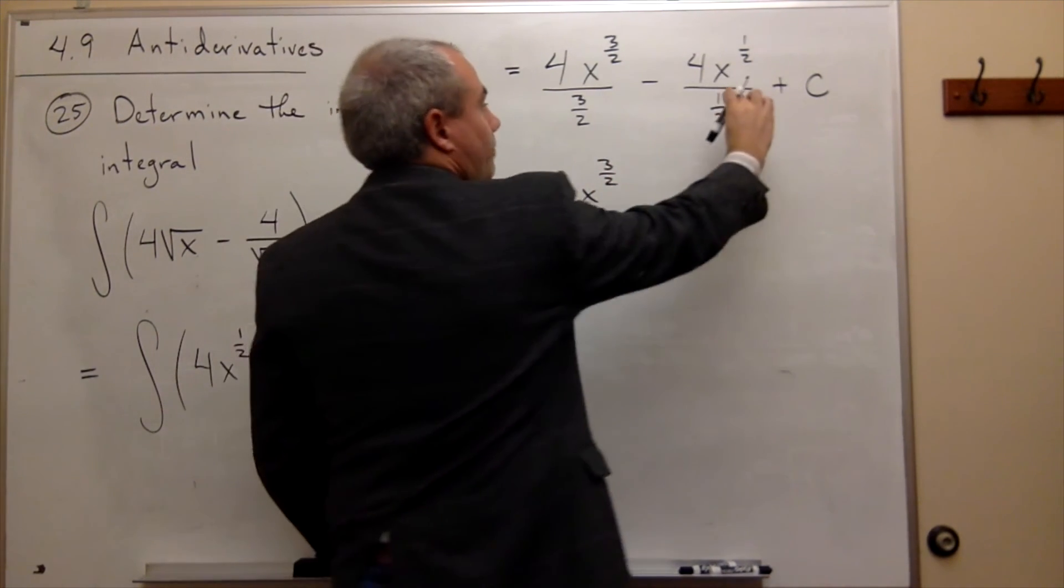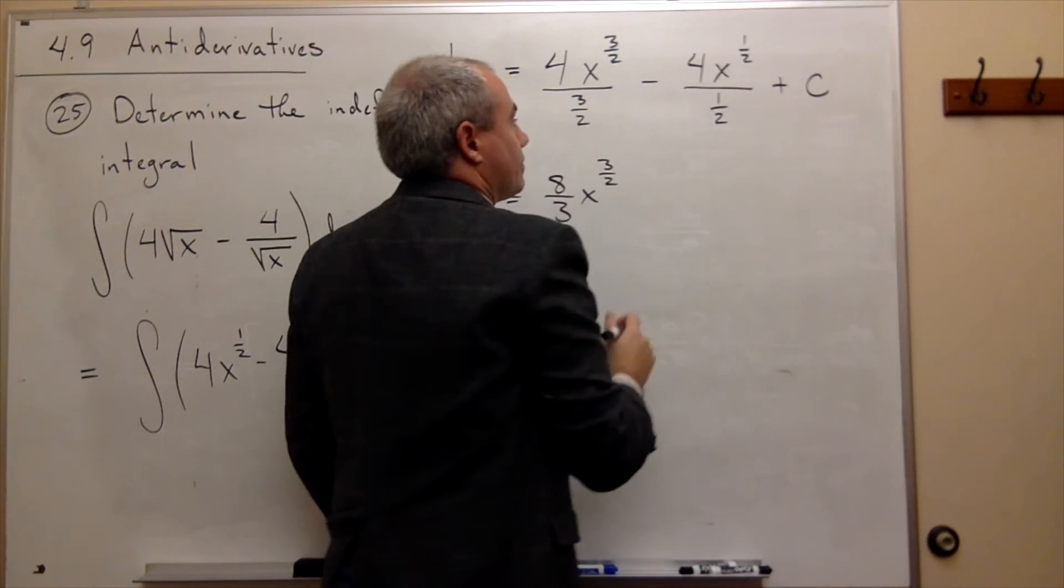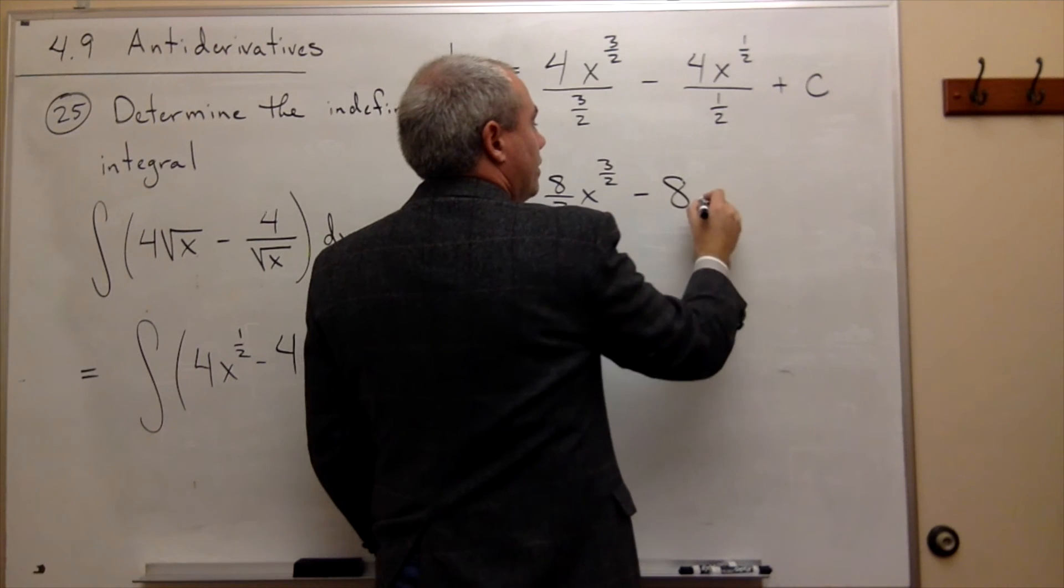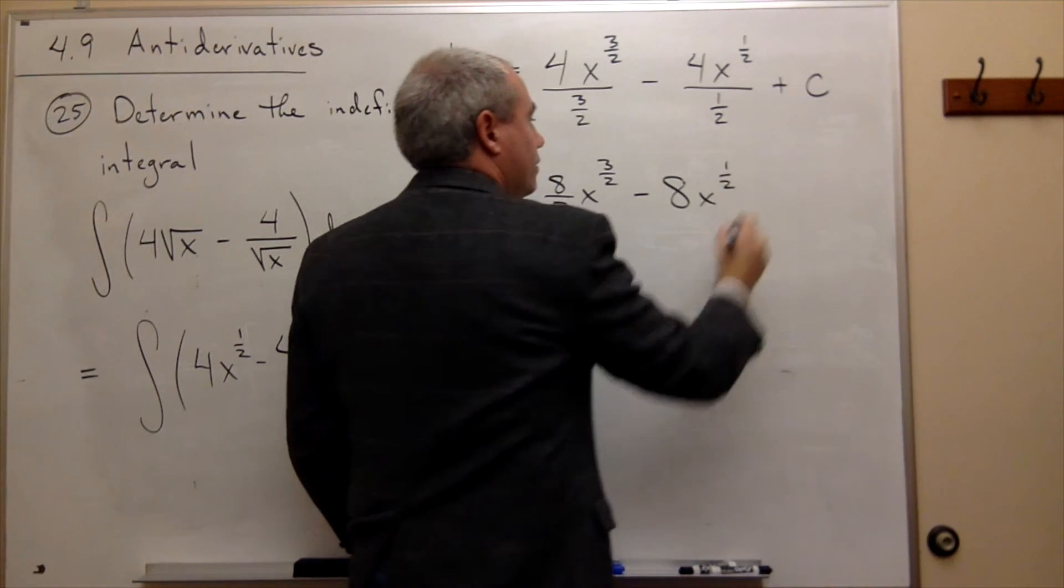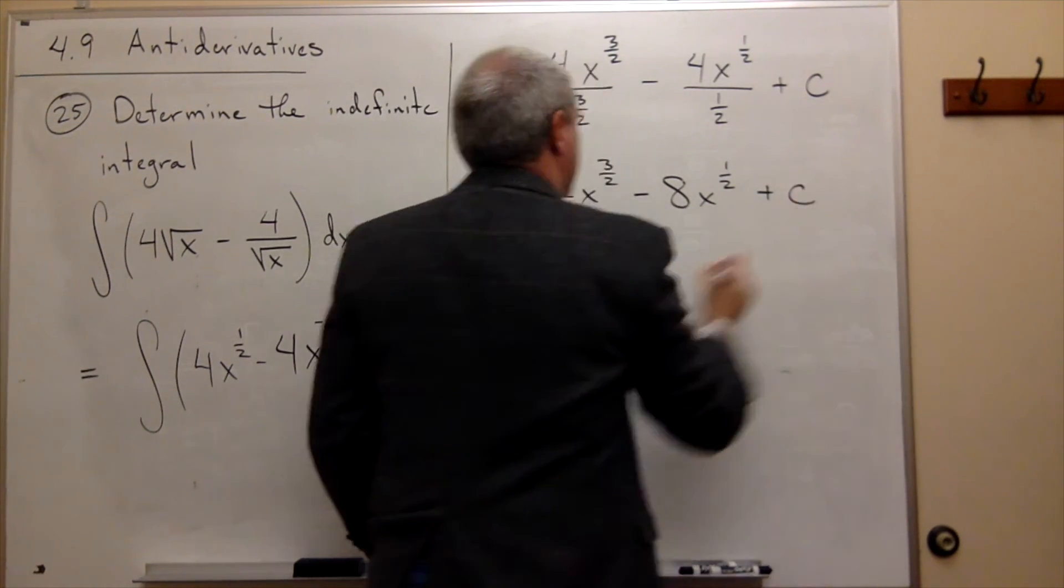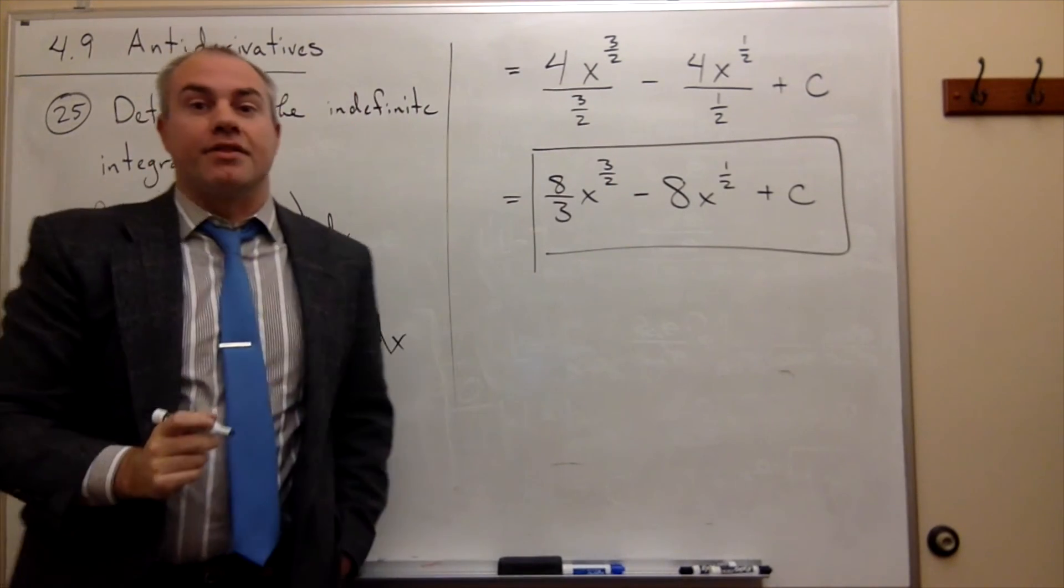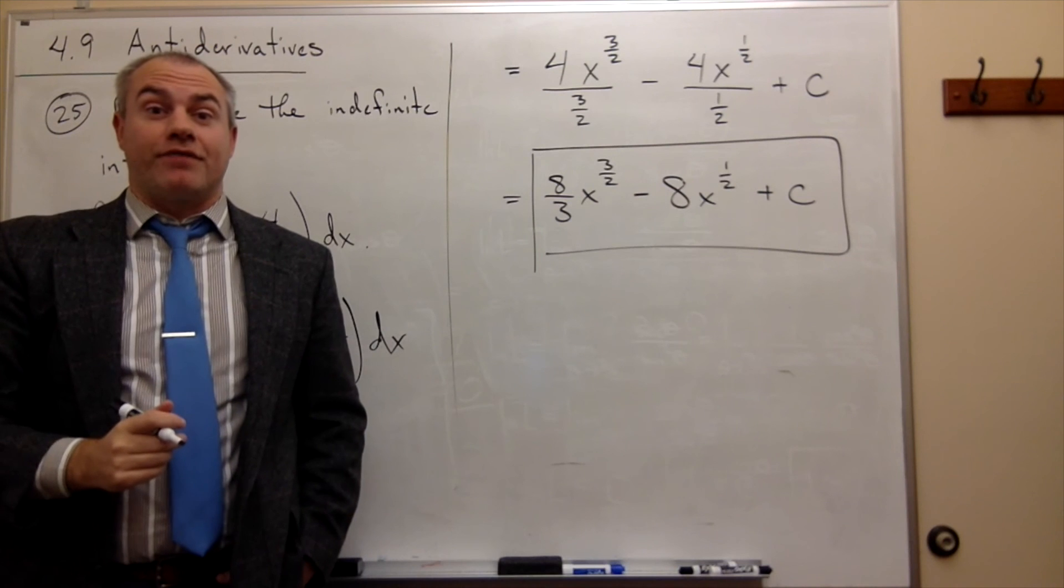And then if I flip and multiply this 1 half, it's the same as multiplying by 2. So it's minus 8 x to the 1 half plus C. And this is my anti-derivative.